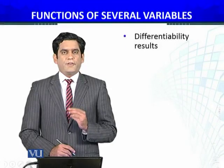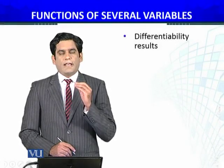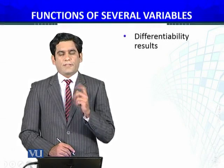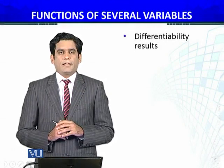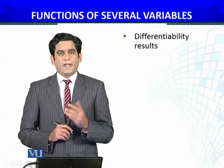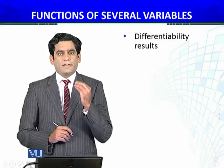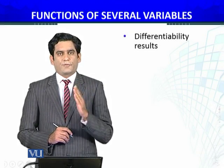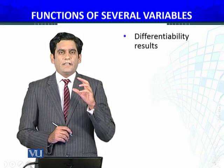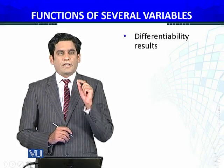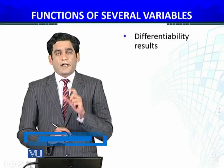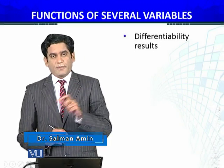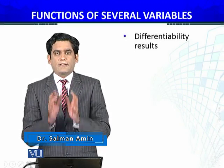In the definition of differentiability we have Mi's. I am going to prove that these real numbers M1, M2, M3, M4, and so forth Mn are indeed the partial derivatives of the given function—the partial derivatives with respect to the i-th variable evaluated at x0.